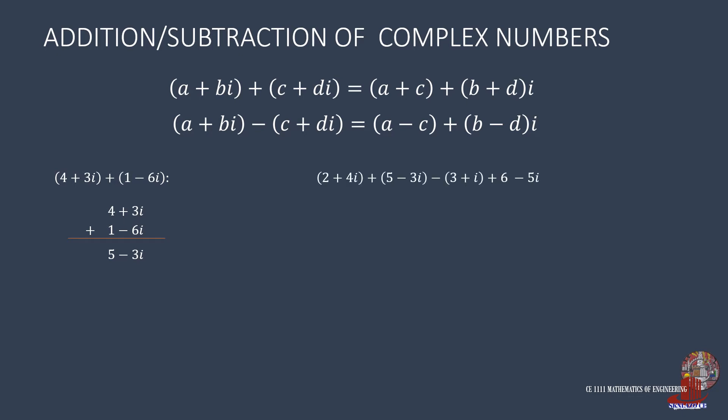Say there are 2 plus 4i added to 5 minus 3i minus 3 plus i, then add 6, and subtract 5i. Placing them vertically makes it easier to add the real numbers 2 plus 5 plus negative 3 plus 6 as equal to 10. The imaginary numbers are also added as 4 minus 3 minus 5, with i as equal to negative 3i.